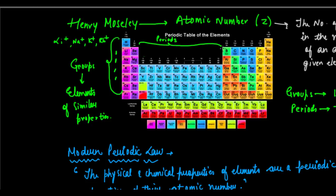One more thing to note is that there was a zigzag line in the periodic table. This zigzag line basically separated the metals from the non-metals. On one side you find only metals — aluminium, gallium, indium, thallium, lead, silver, zinc, palladium — all these are metals. And from this zigzag line you find the non-metals or metalloids — boron, silicon, arsenic, carbon, nitrogen — all these are non-metals. So this zigzag line separated the metals from the non-metals.